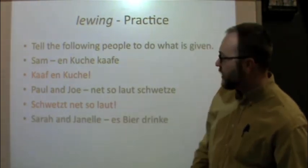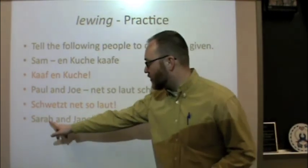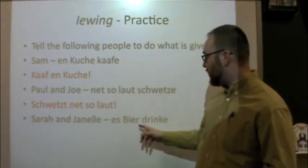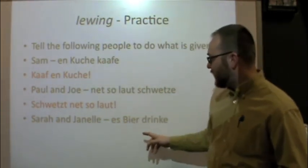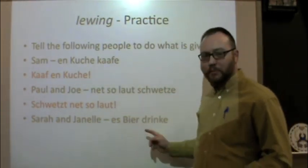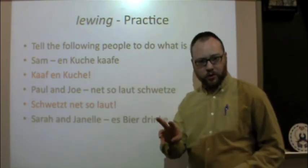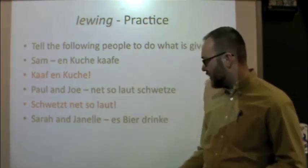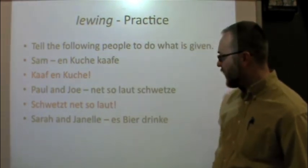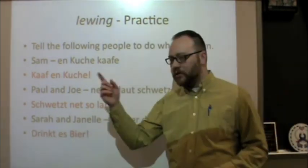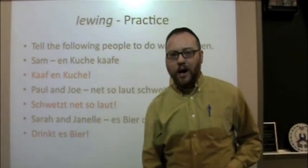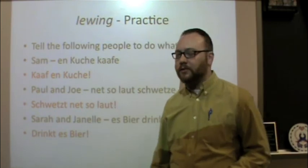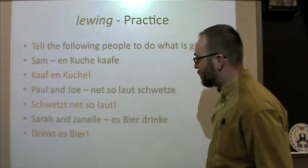And finally, we're talking to Sarah and Janelle and we want to say 'es bier dringe' — drink the beer. We want to tell two people, so plural command form again. Our verb is 'dringe' — drop the E, add a T: 'drink des bier' — drink the beer.